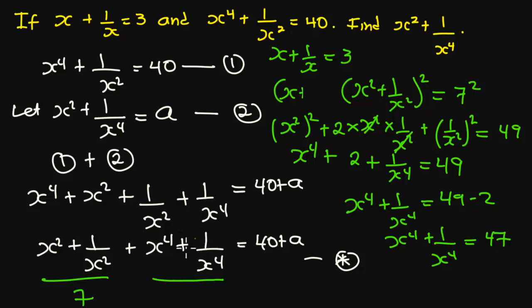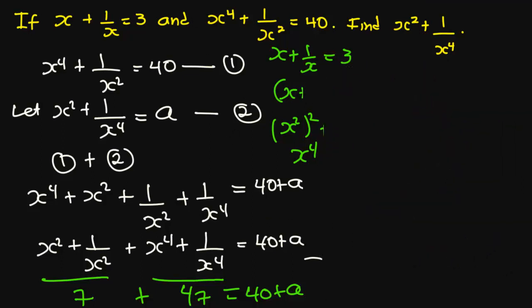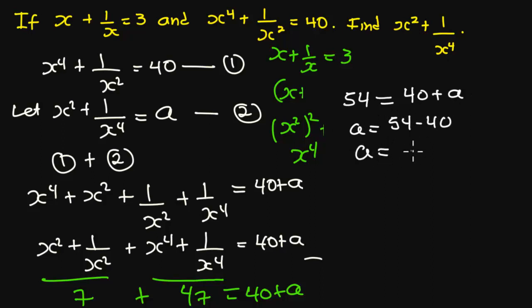So we have s to the power 4 plus 1 over s to the power 4 equal to 47. Substituting back: 7 plus 47 equals 40 plus a, which gives 54 equals 40 plus a, so a equals 54 minus 40, which means a equals 14. Since we let s squared plus 1 over s to the power 4 equal to a, the value of s squared plus 1 over s to the power 4 is equal to 14.